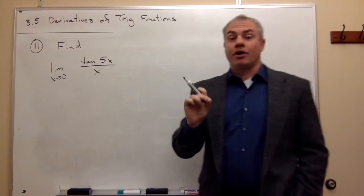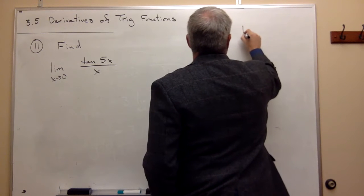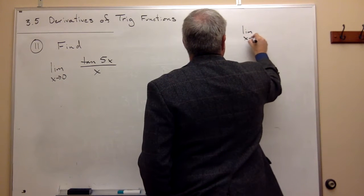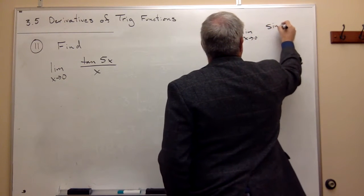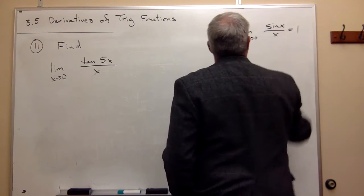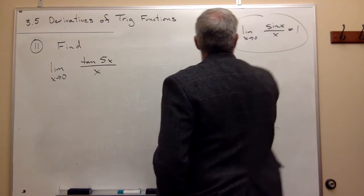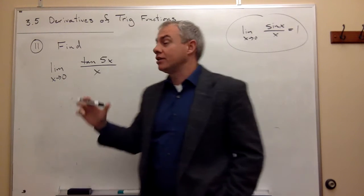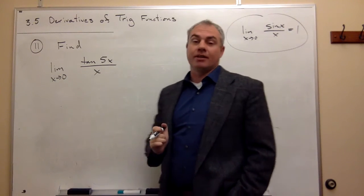Now, remember what we know about is the limit as x goes to 0 of sine x over x, and we know that that's 1. And we'd like to use that piece of information to help us evaluate this limit over here.